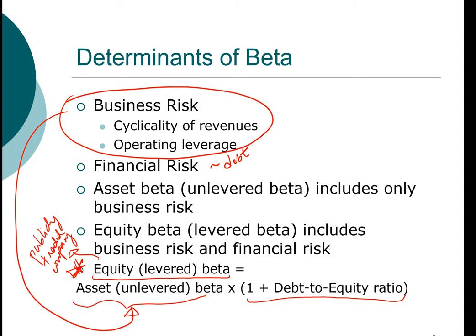You can then apply that asset beta to your own situation. All you have to do is take the industry or asset beta times one plus the debt-to-equity ratio of your own specific firm. In that way, you can come up with your own estimate of the equity or levered beta — and estimate beta for a company that may not even have stock currently being traded.